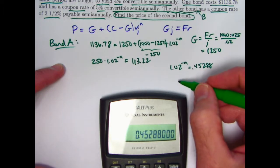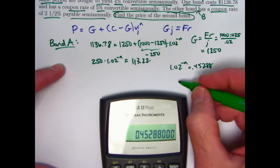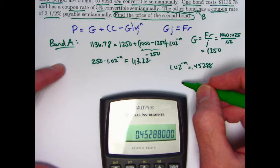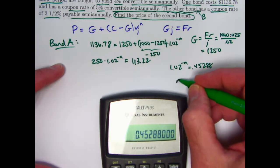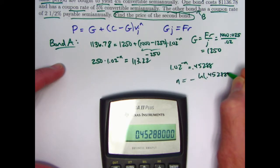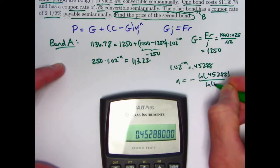Take the natural log of both sides, use properties of logarithms to bring the negative n in front, and then divide both sides by the natural log of 1.02 and negative 1. And what you would get is n to be negative natural log of 0.45288 divided by natural log of 1.02.